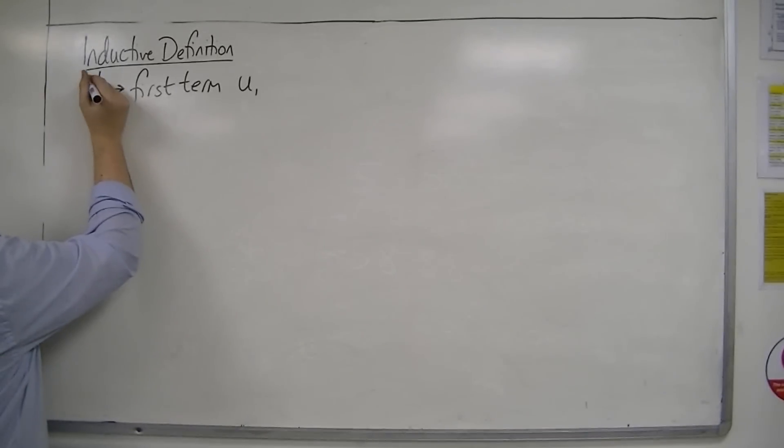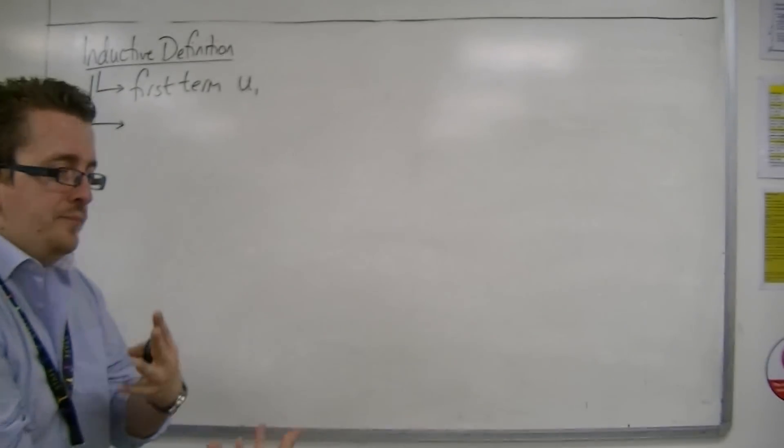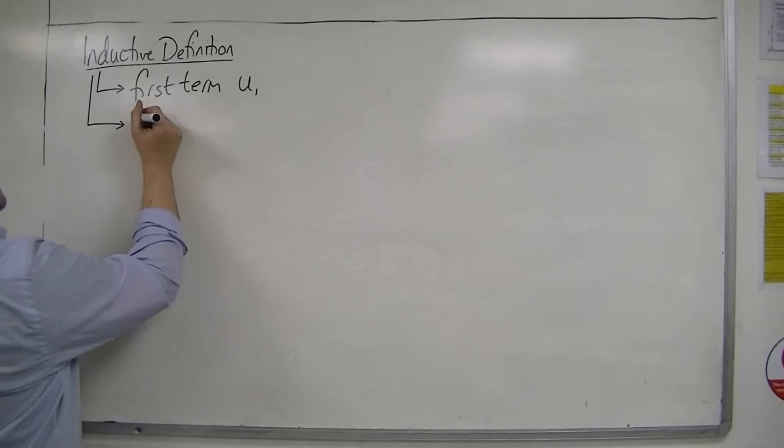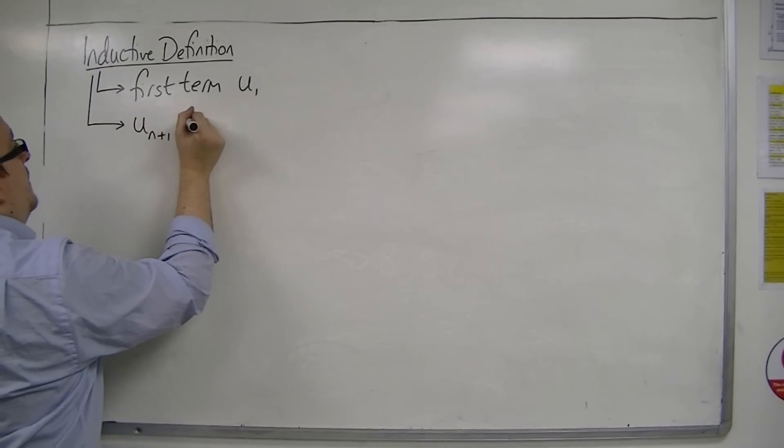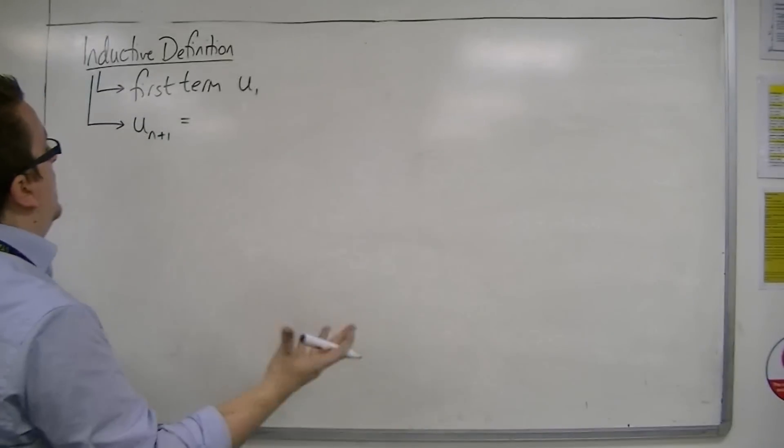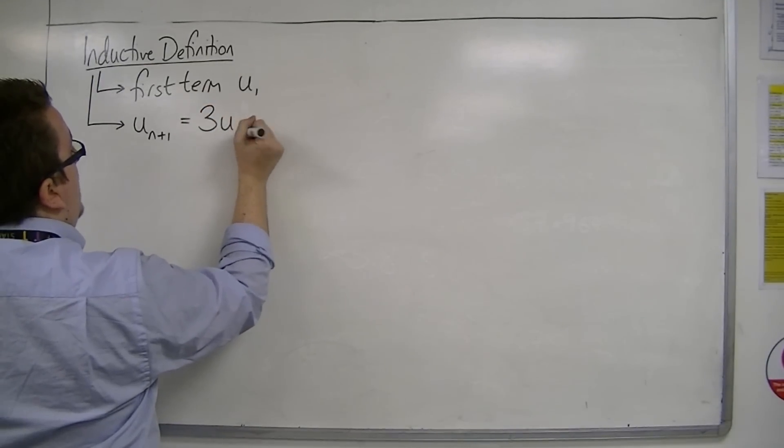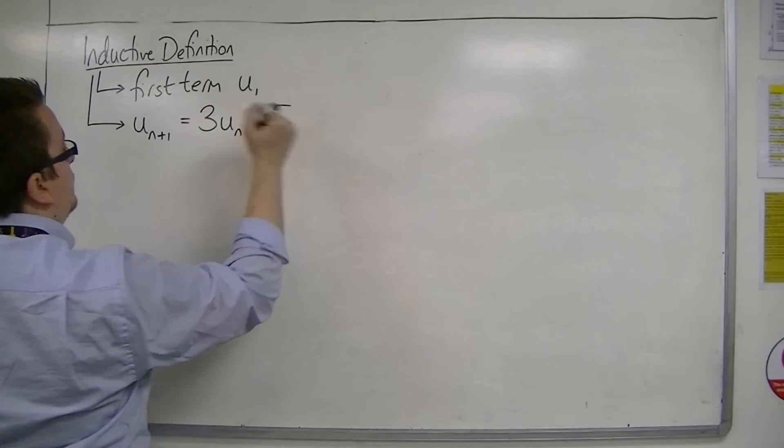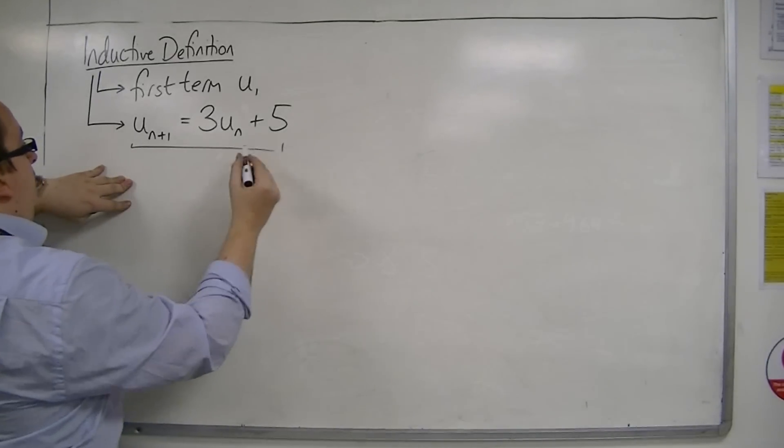Once you have your first term, you must then have a rule that gets you to the next term. And this is known as a recurrence relation and will look something like this. The next term, the U_{n+1}th term, is, for example, 3U_n plus 5. So this may well be the recurrence relation for a sequence.